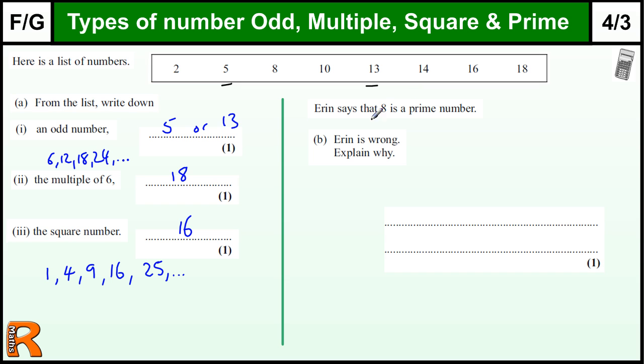And then we've got a question about prime numbers. Erin says 8 is a prime number. Erin is wrong, explain why. Well, the definition of a prime number, the proper definition, is it has exactly two factors.